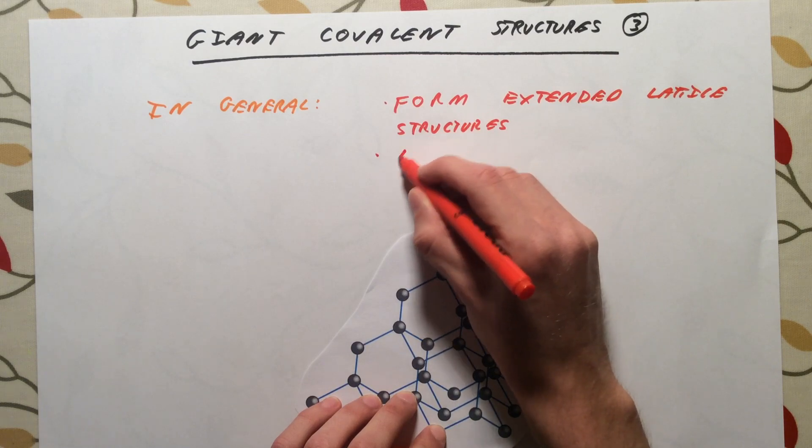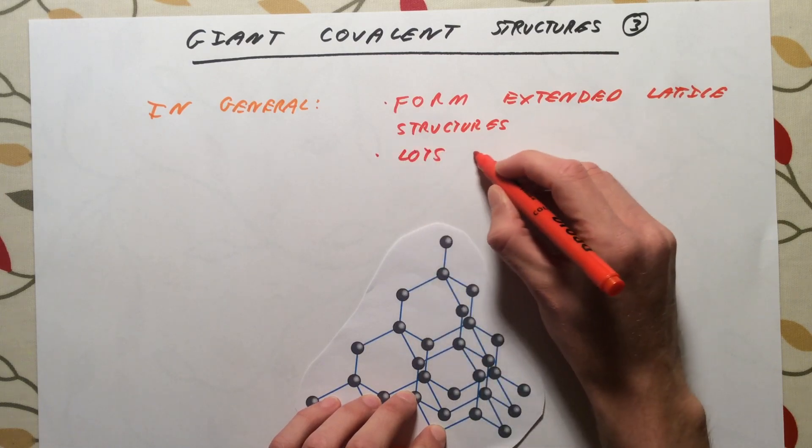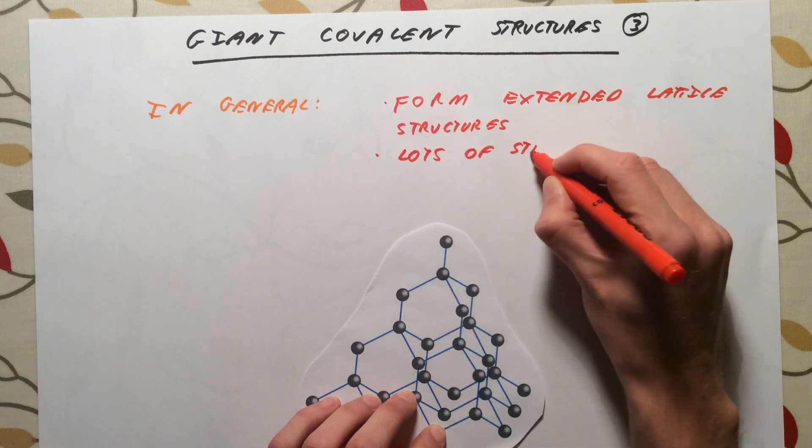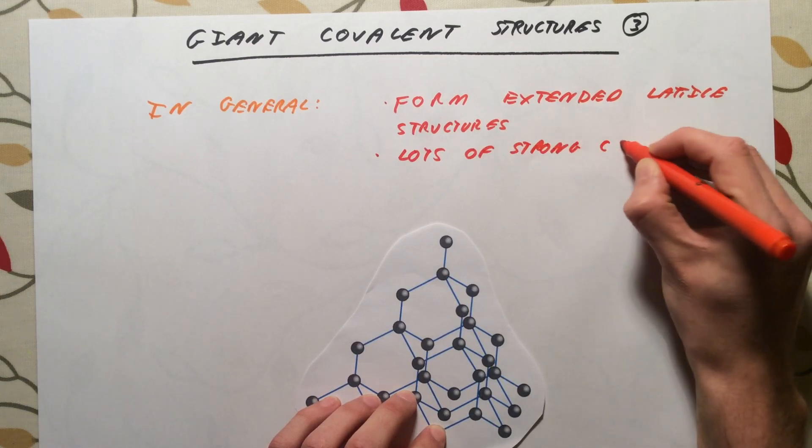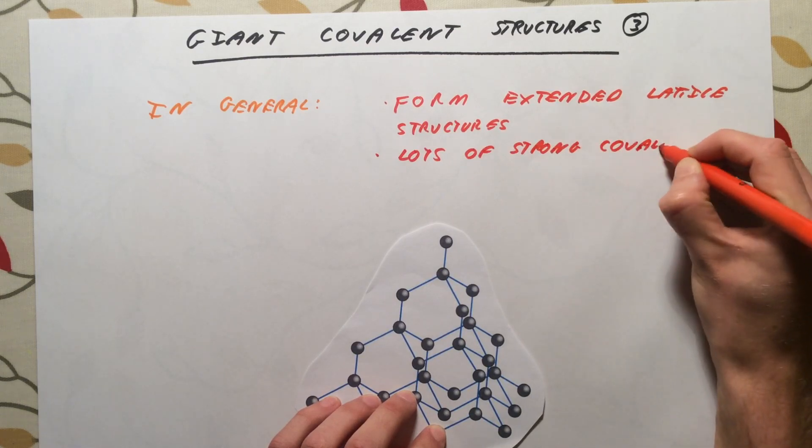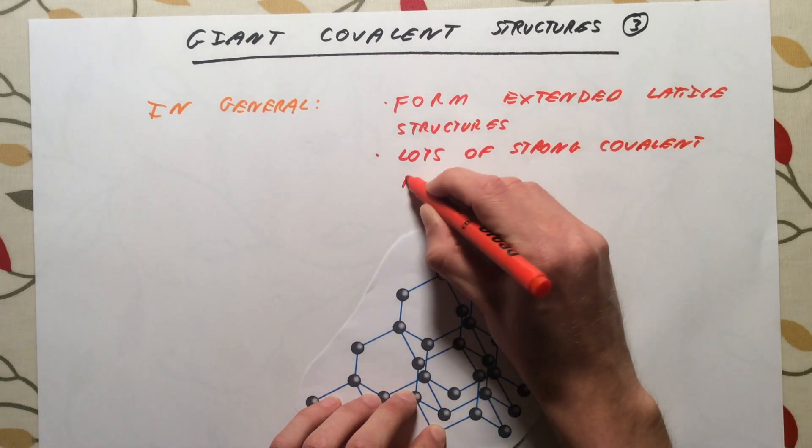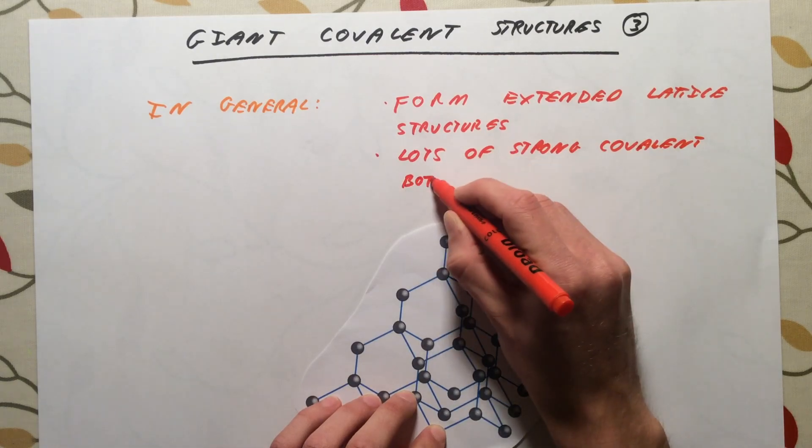All the atoms are joined together by strong covalent bonds. All the atoms are sharing pairs of electrons between them.